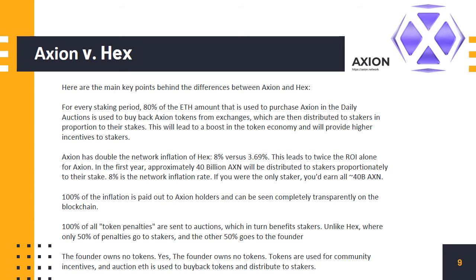Axion vs. HEX — the key differences: For every staking period, 80% of the ETH used to purchase Axion in the daily auctions is used to buy back Axion tokens from exchanges, which are then distributed to stakers in proportion to their stakes. This leads to a boost in the token economy and provides higher incentives to stakers. Axion has doubled the network inflation of HEX — 8% versus 3.69% — leading to twice the ROI. In the first year, approximately 40 billion AXN will be distributed to stakers proportionately to their stake.